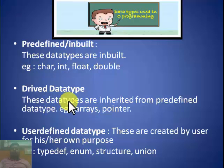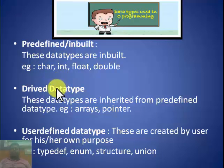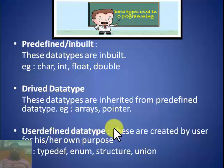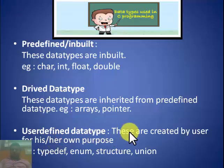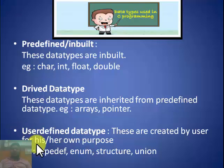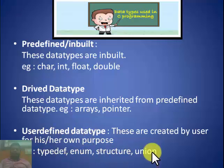Derived data types are inherited from predefined data types and are used to define other data types. Examples are array, pointer, etc. User-defined data types are created by the user for his or her own purpose. Sometimes a user needs to create their own data type, and in those cases they use user-defined data types. Examples are typedef, enum, struct, and union.